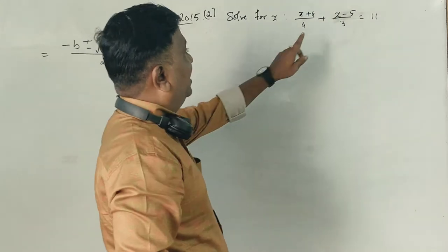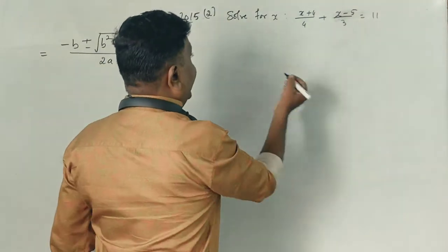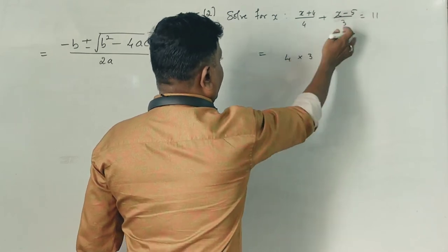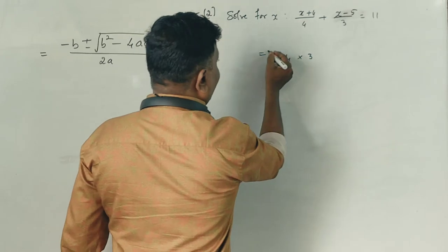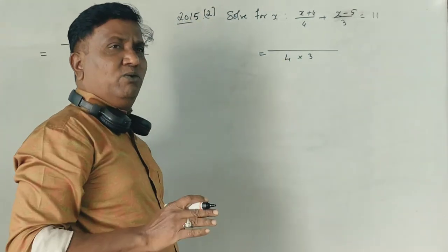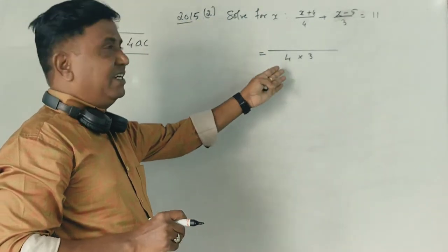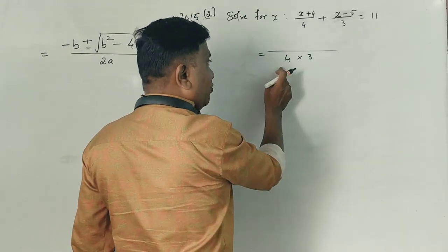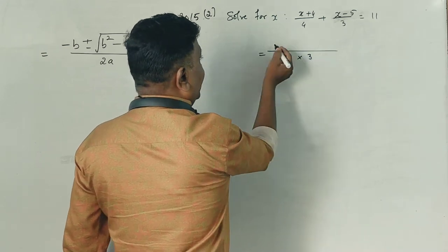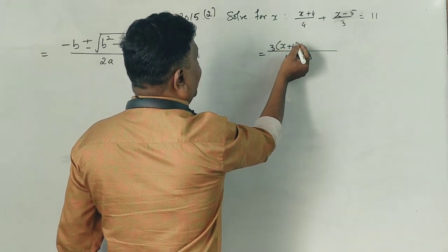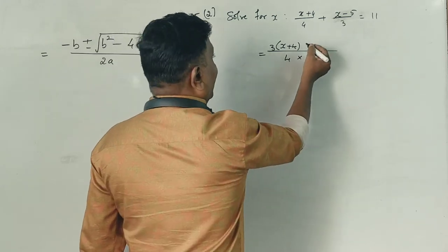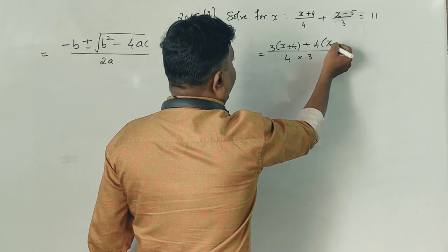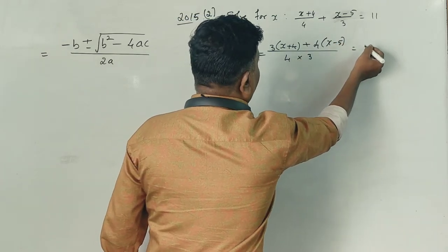First, the LCM is equal to 4 into 3. So the LCM is 12. This is a simple line — this is third standard, second standard level. So 4 into 3, the common factor is 3. That is: x plus 4 multiplied by 3, into x plus 4. This is a plus sign, 3 is common. So 4 into (x minus 5) is equal to 11.